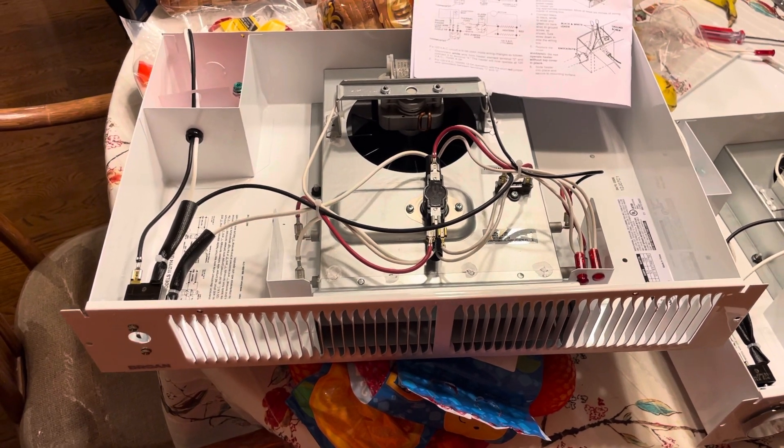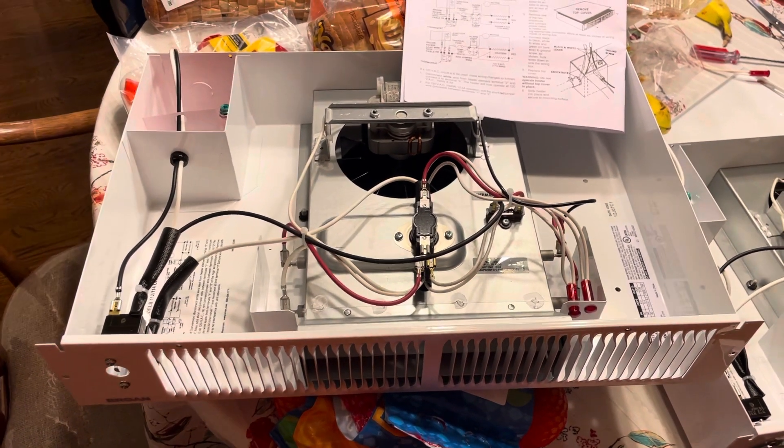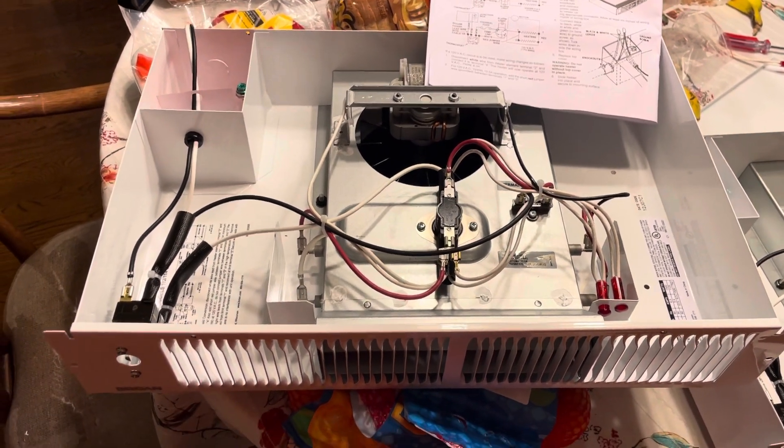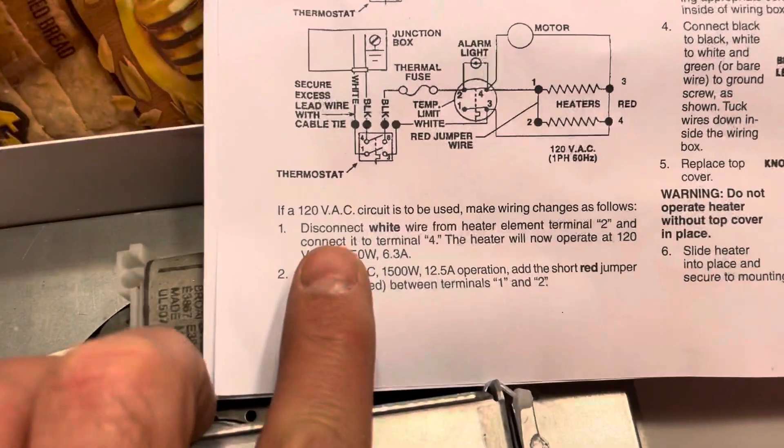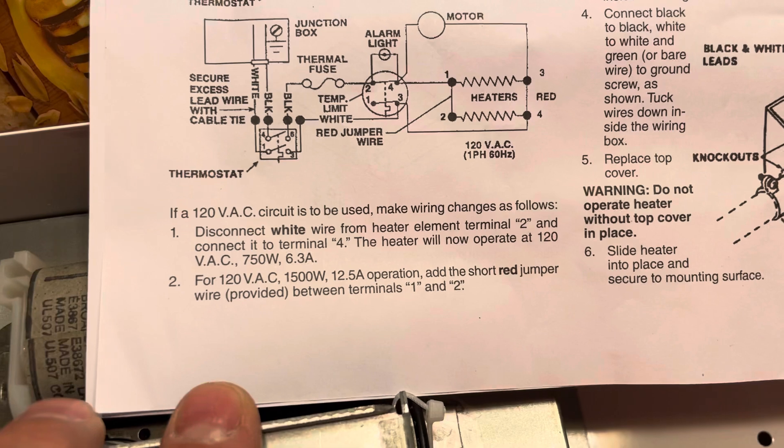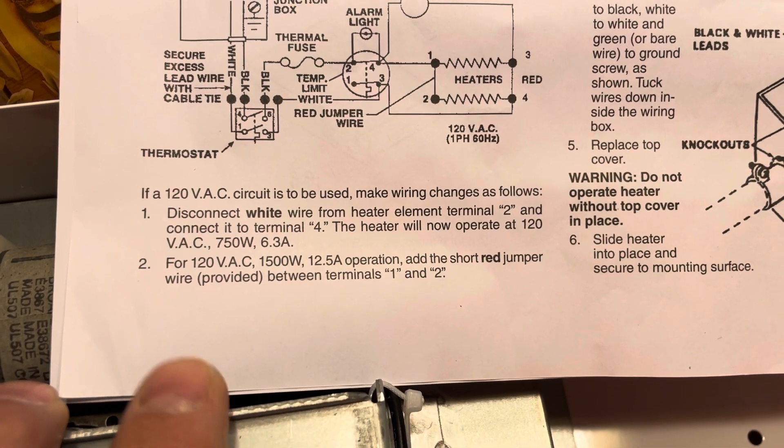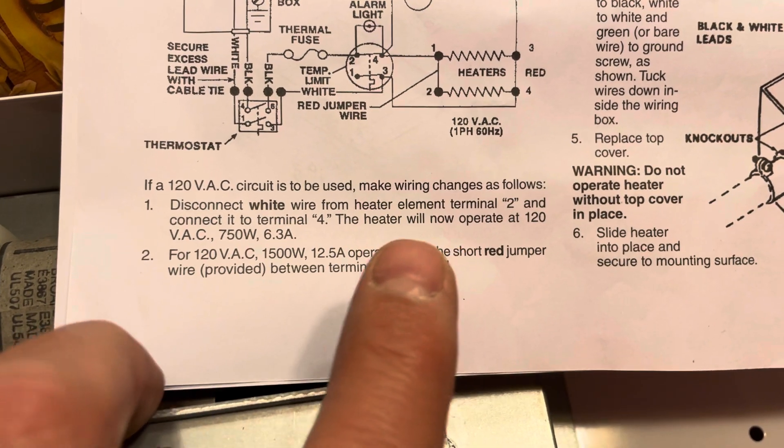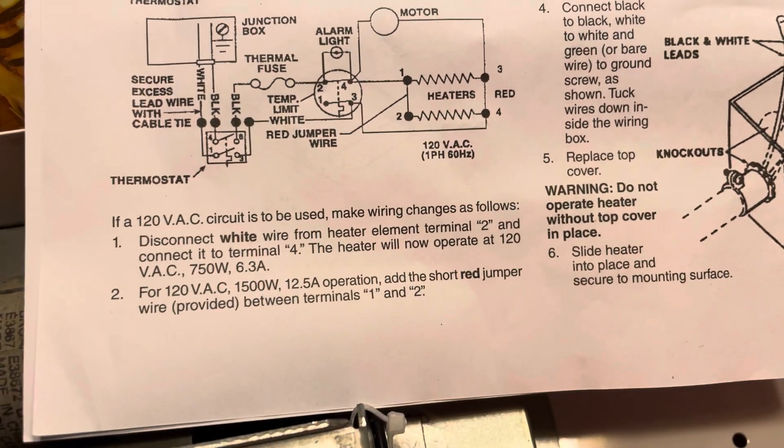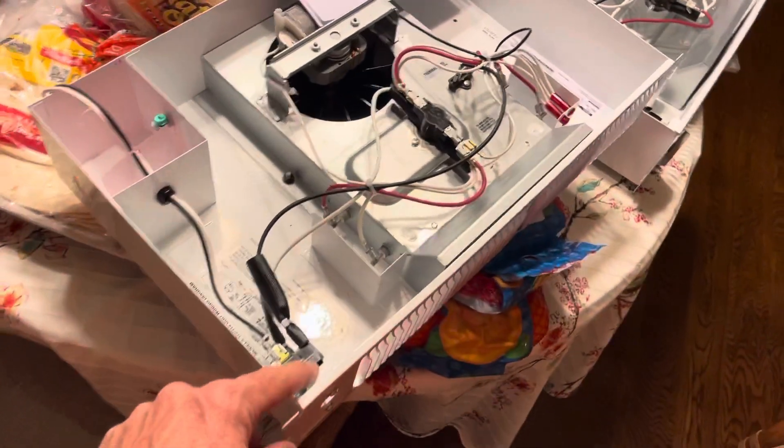And then also be able to alternate between 750 watts and 1400 watts of operation. So here we go. The first thing you do is if 120 volts AC circuit is to be used, make wiring changes as follows: disconnect the white wire from heater element terminal 2 and connect it to terminal 4.